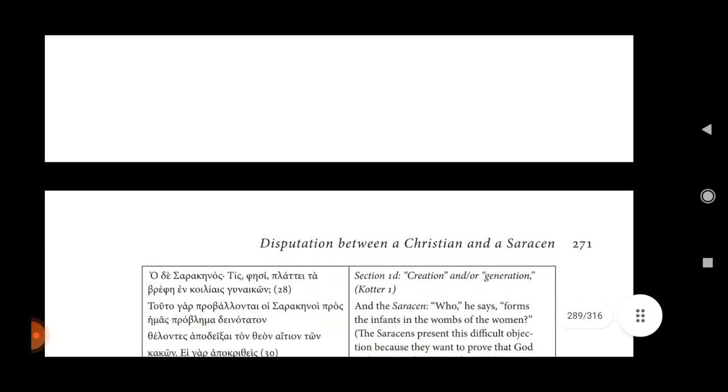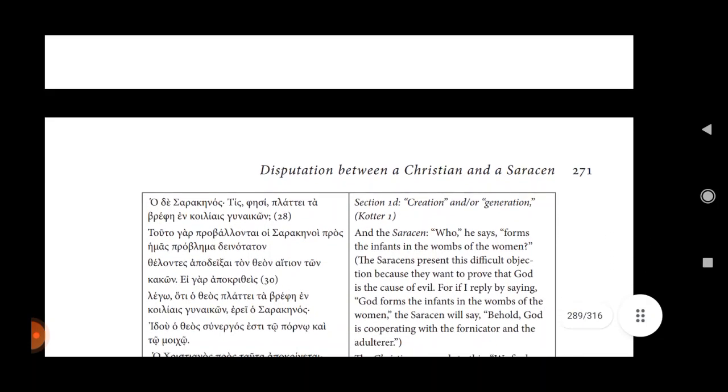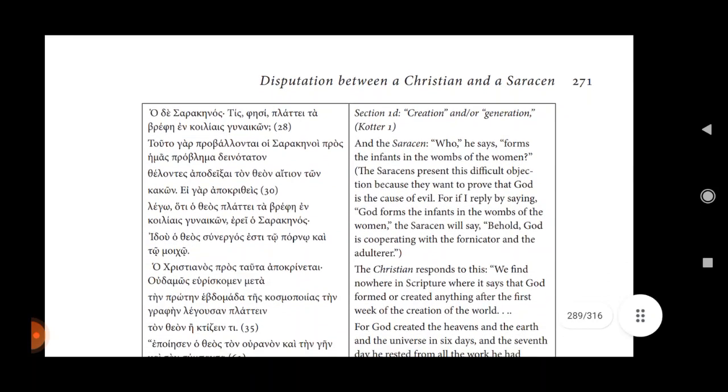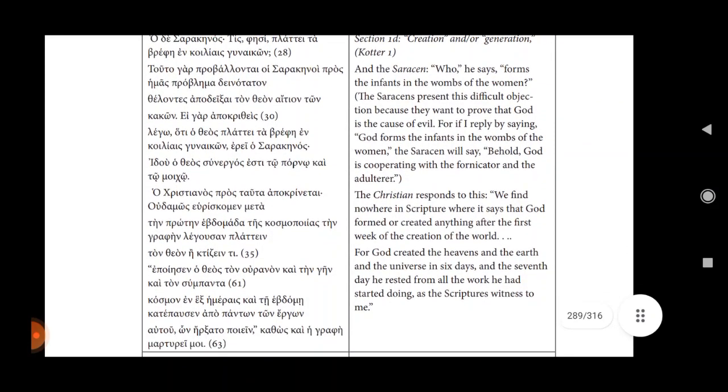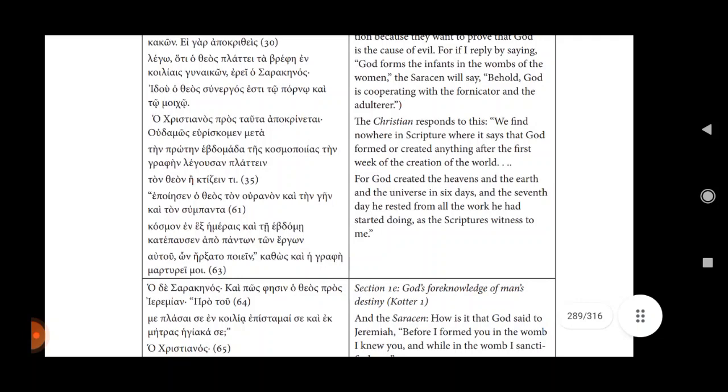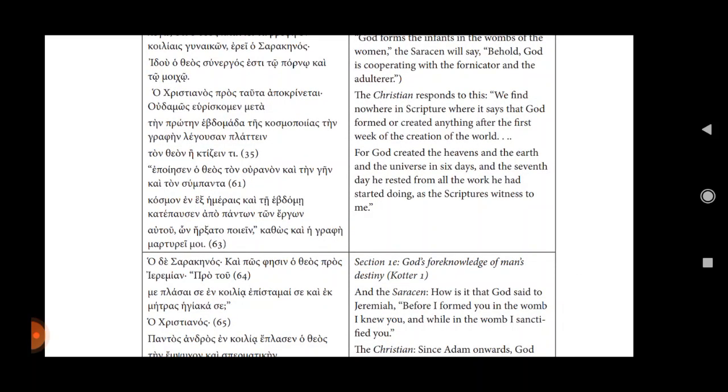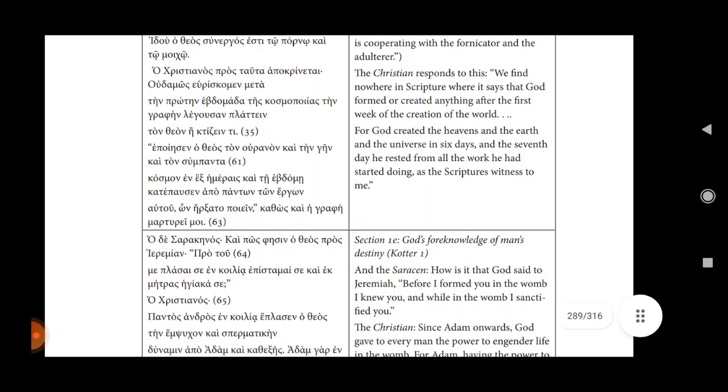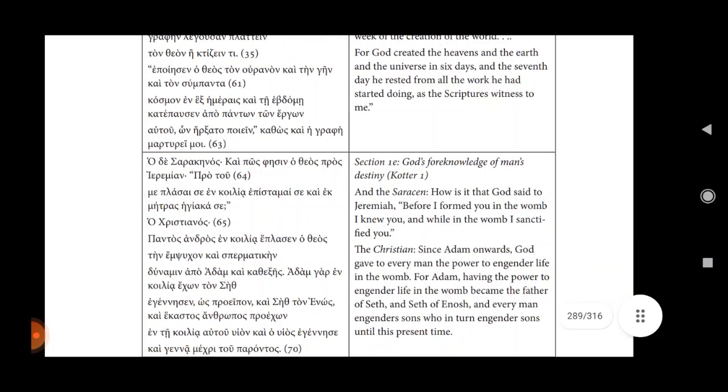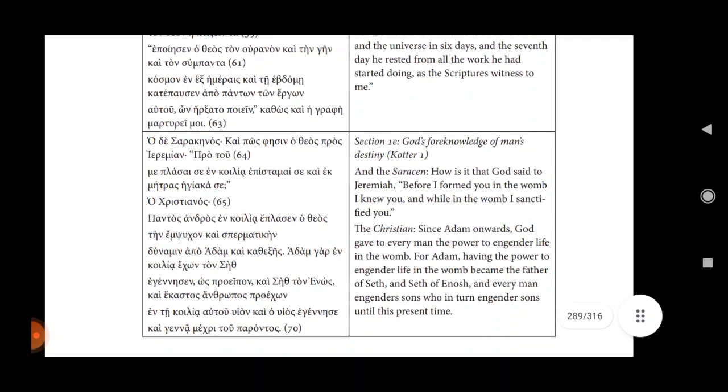Section 1d, Creation and All Generation. Quotar one. The Saracen, who, he says, forms the infant in the womb of the woman. The Saracens present this difficult objection because they want to prove that God is the cause of evil. For if I reply by saying God forms the infant in the womb of the woman, the Saracen will say, Behold, God is cooperating with the fornicator and the adulterer. The Christian responds to this: We find nowhere in the scripture where it says that God formed or created anything after the first week of the creation of the world. For God created the heavens and the earth and the universe in six days, and the seventh day he rested from all the work he had started doing as the scriptures witness to us.